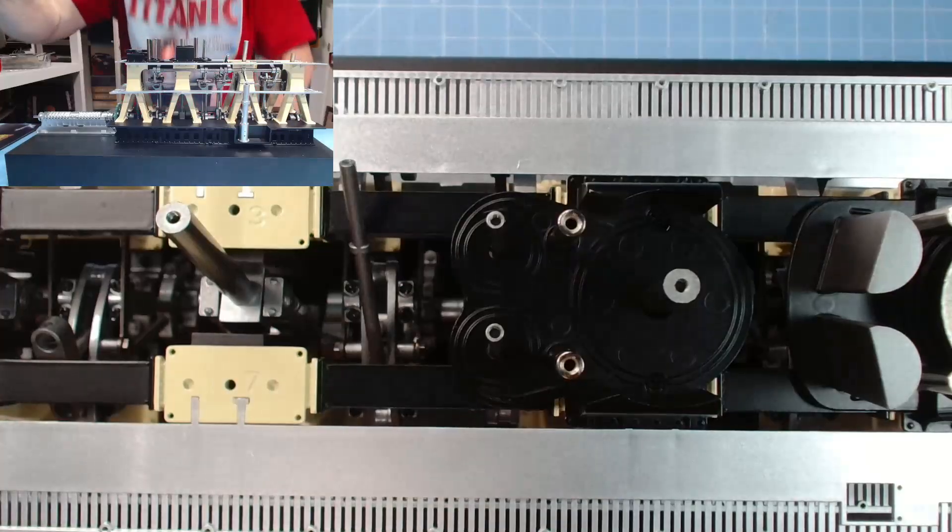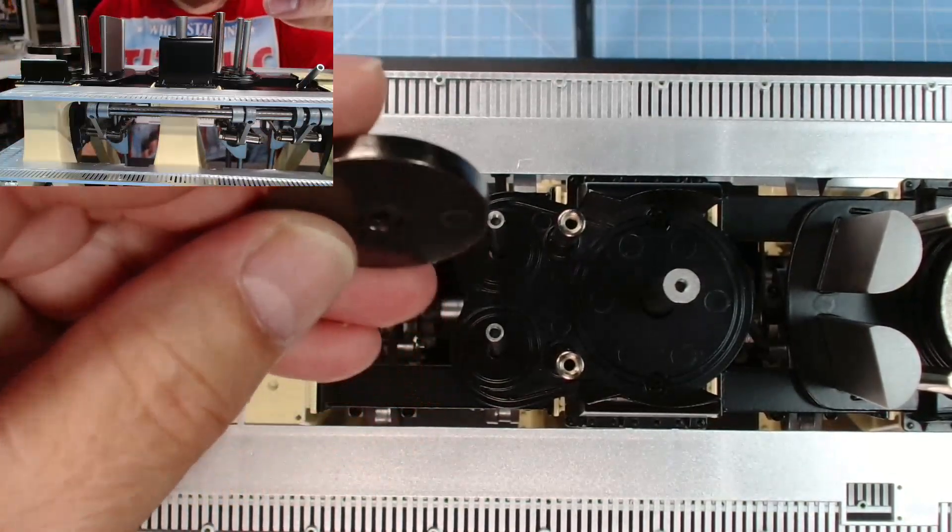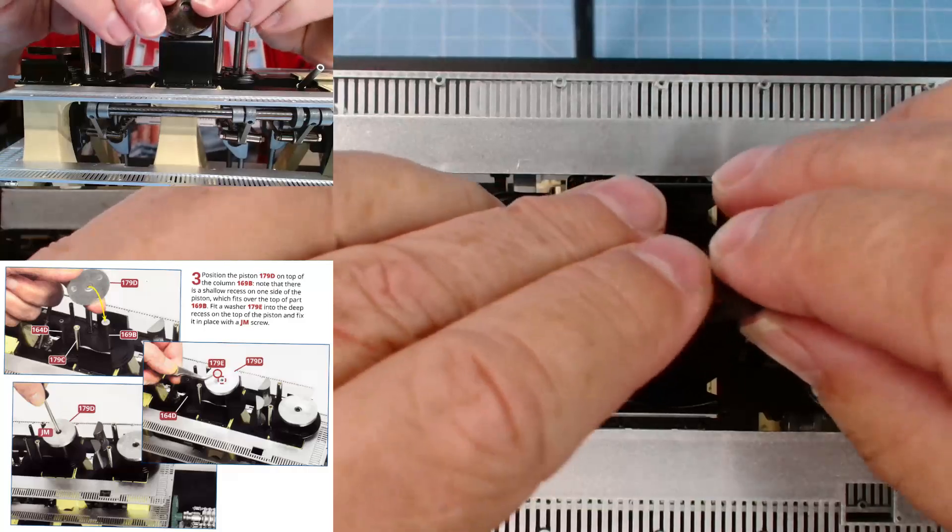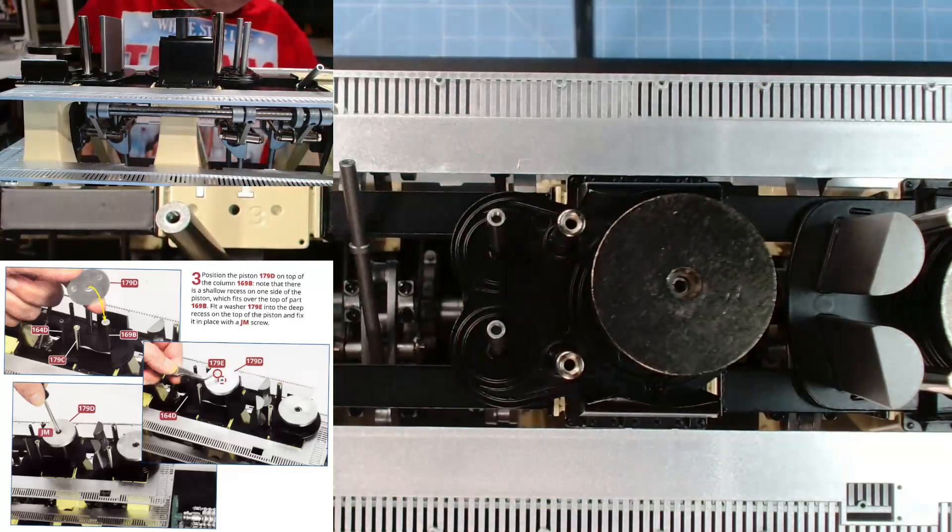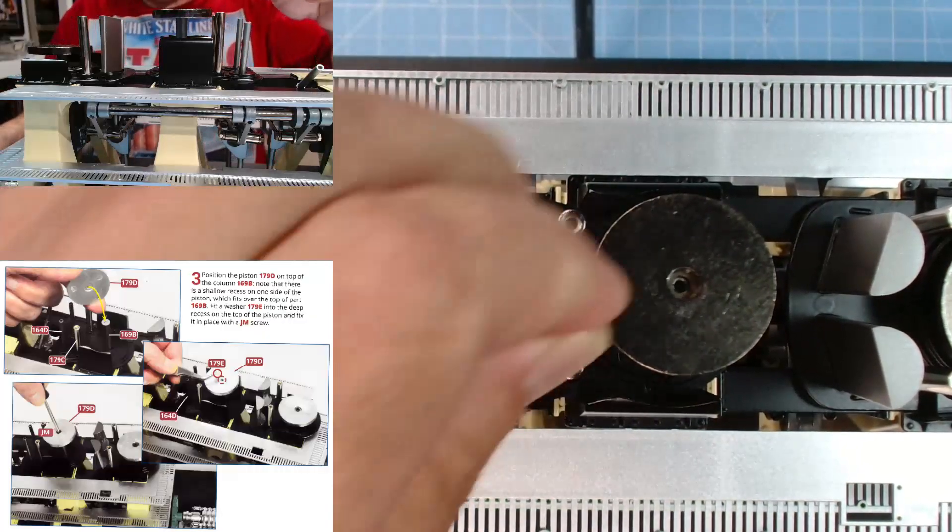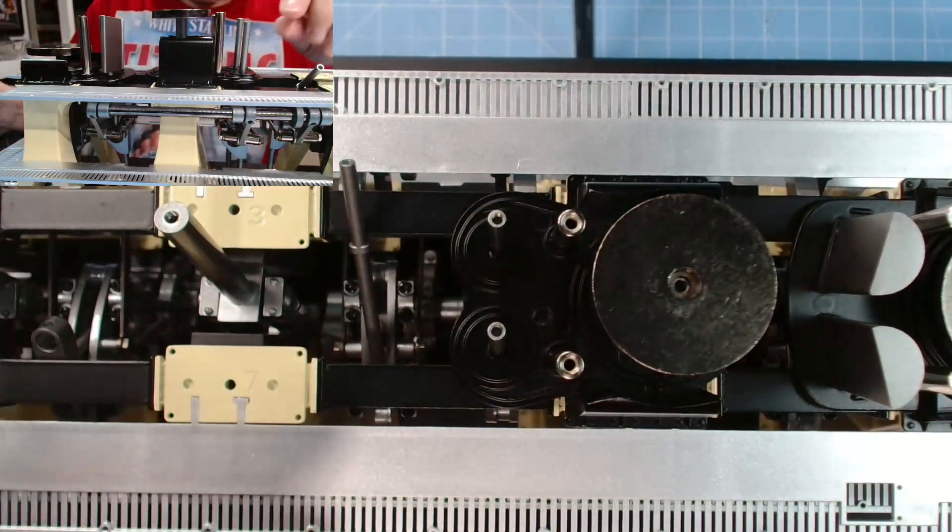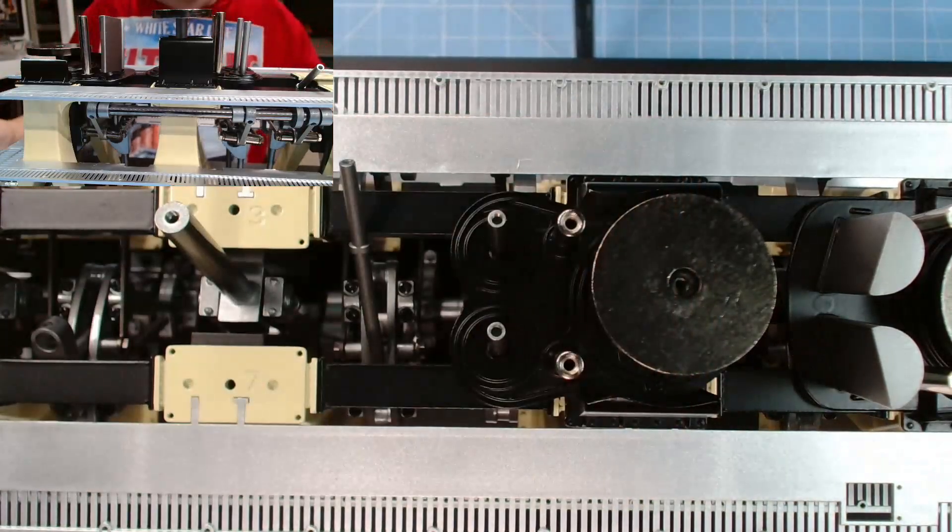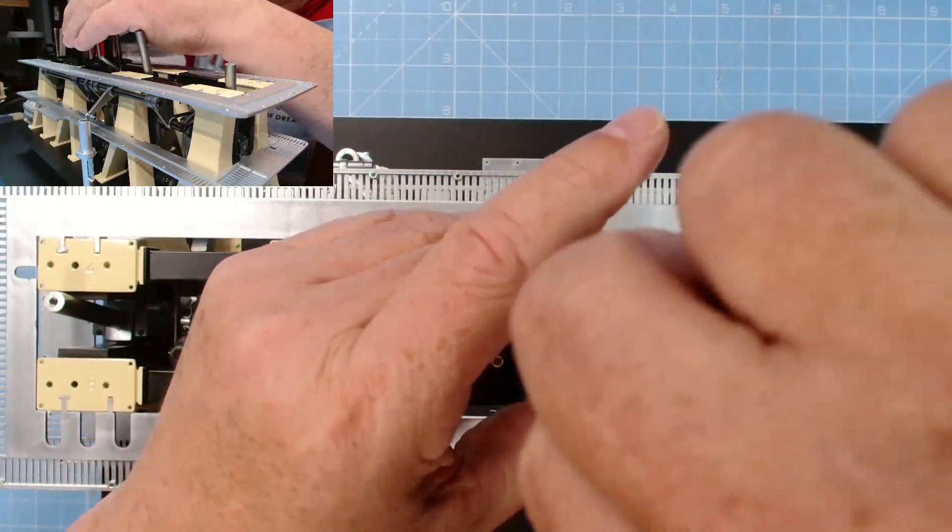Let's tighten these up a little bit more, quarter of a turn. Now we need 179D. There's a shallow recess and a deeper one. The shallow recess goes there on 169B. We need a washer in there and a JM screw. Let's get the JM screw in here and secure 179D.